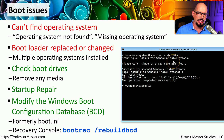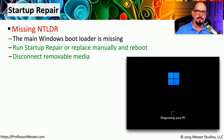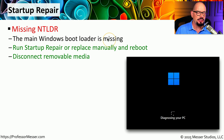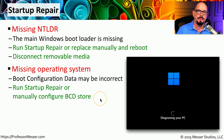If you run bootrec /rebuildbcd in the recovery console, it will scan all of your drives to find a Windows installation. If it finds one, it will tell you where that installation is, and you can choose to add it to your boot list and restart your computer. Startup Repair can also find and solve many different problems automatically — for example, if you have a missing NT Loader message, it will look for the missing Windows configuration and add it back. If you've changed your Windows directory name or moved it to a different drive, Startup Repair can find that configuration, or you can manually configure the BCD yourself.